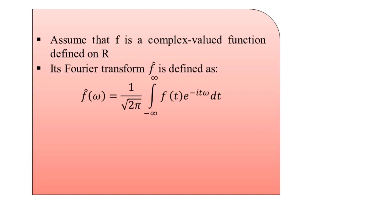The Fourier transform F-cap of omega, where omega is the angular frequency (omega = 2π f), is expressed as one over square root of 2π, multiplied by the integral from minus infinity to infinity of f(t) times e to the power of minus i·t·omega, dt. If the function f belongs to the functional space L¹, the integral will make sense for every value of angular frequency omega, and F-cap of omega will be a continuous bounded function that goes to zero at infinity.